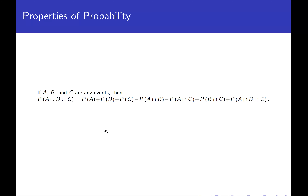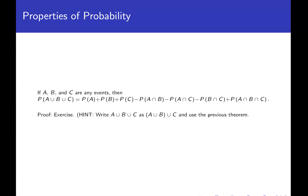There is a similar theorem for the probability of a union of three sets, which we'll leave as an exercise. The hint is to rewrite the union of three things as a union of two, apply the previous theorem, and then apply it again to the resulting union of two events.